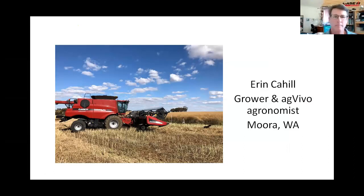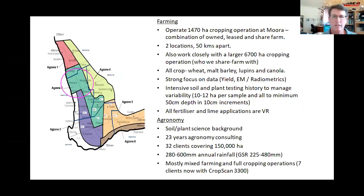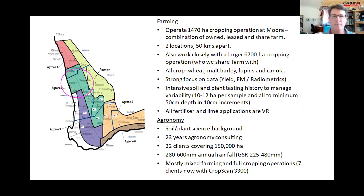We're farming about 180 km north of Perth in Western Australia — a bit south of Ben. We've got a combination of owned, leased, and share-farmed land across two locations about 50 km apart, but with very different soil types — ranging from better forest gravels and loams through to high-rainfall sampling areas where nitrogen management is critical due to significant leaching pressure.